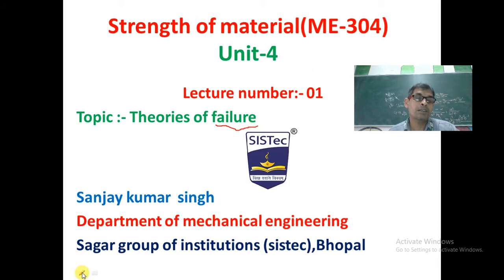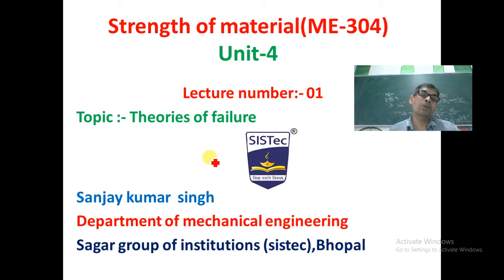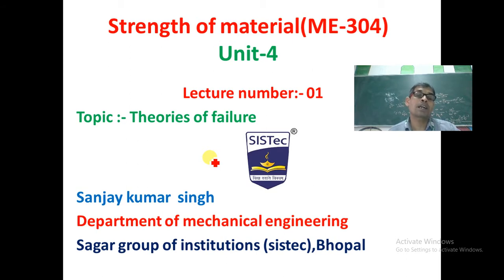Failure is mainly classified into two types: ductile failure and brittle failure. When we put a load on metal, there will be crack formation and then the metal fails. In ductile failure, before the metal fails, there is a necking formation where the diameter decreases. We call this ductile failure.